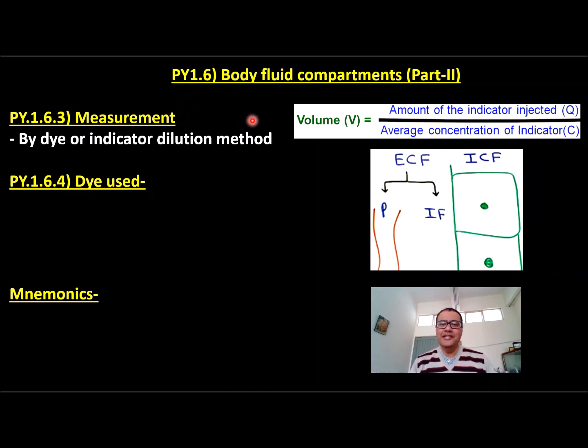In this method, volume equals amount of dye or indicator used divided by average concentration of dye or indicator. This video is mainly to prepare dye used, and for that we are using many mnemonics or just tricks, although they are not scientific, just to remember names.